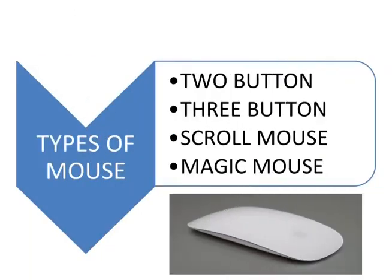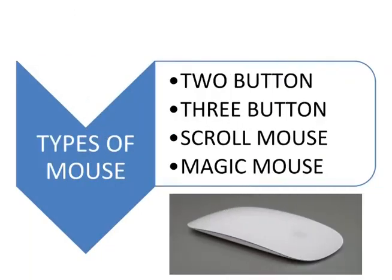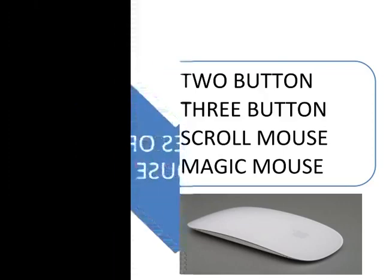Mouse. There are different types of mouse: two button mouse, three button mouse, scroll mouse and magic mouse. A magic mouse is a multi-touch mouse which was designed in 2009.